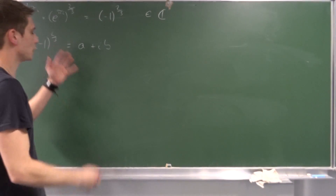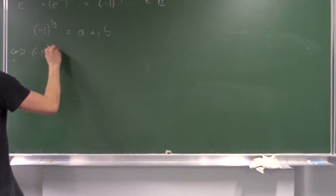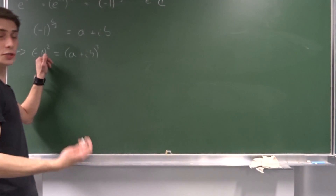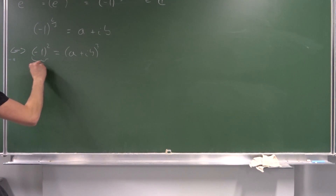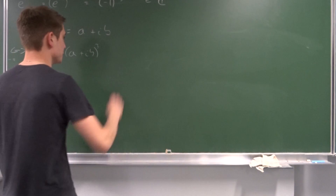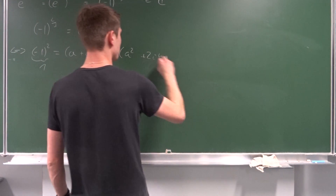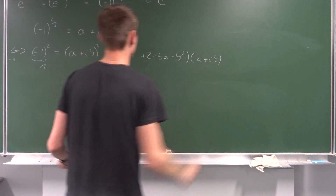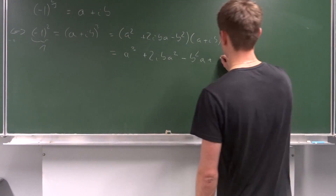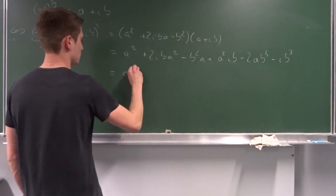We can take the third power on both sides to eliminate the fractional exponent. That means minus one squared equals a plus ib, all to the third power. Minus one times minus one is one, so the left side is just one. Now we distribute: that gives a squared plus 2ib·a minus b squared, times a plus ib, which expands to a cubed plus 2ib·a squared minus b squared·a plus a squared·ib minus 2ab squared minus ib cubed.